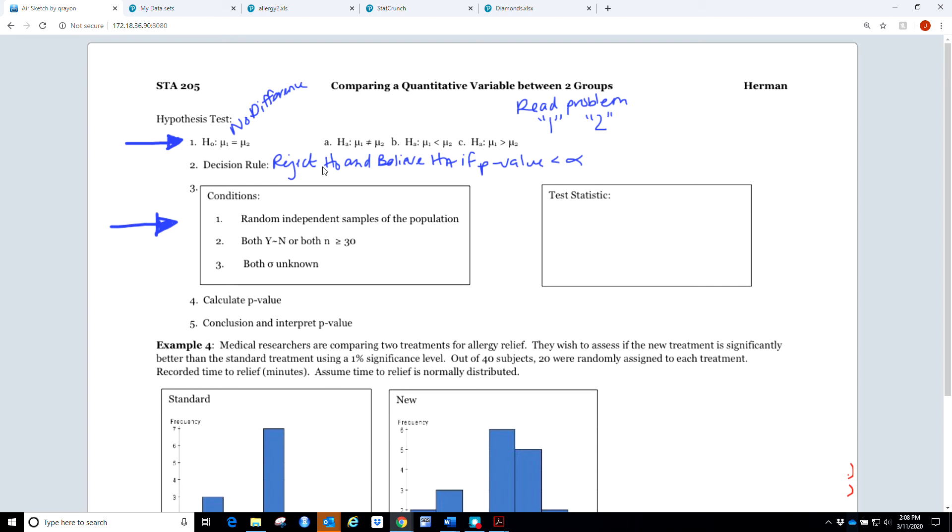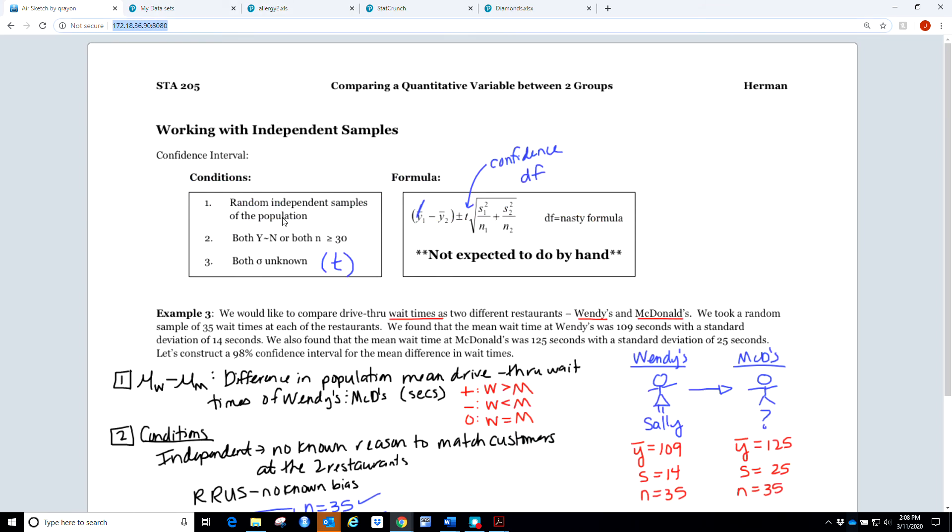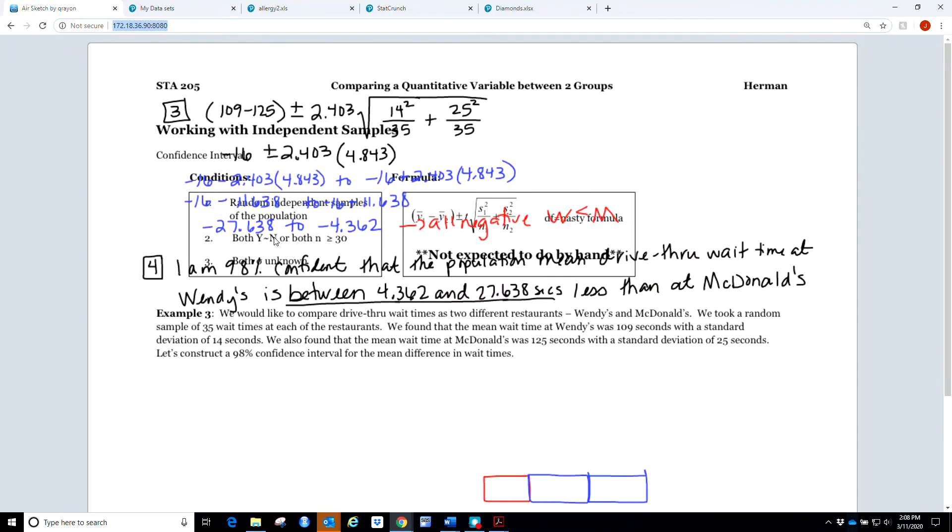Step three is our other big change, but most of these are on your formula sheet. First, you should note that the conditions for the confidence interval are exactly the same as they are for the hypothesis test. I'm not going to go through reiterating those conditions. What I do want to pay some time to is what's going on with the actual test statistic formula.